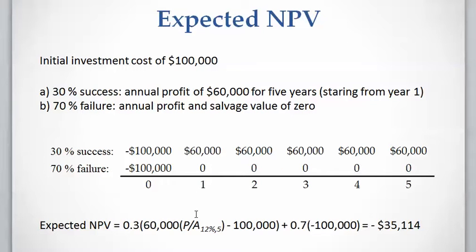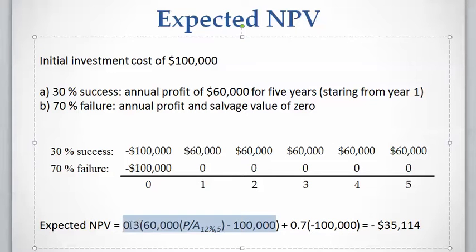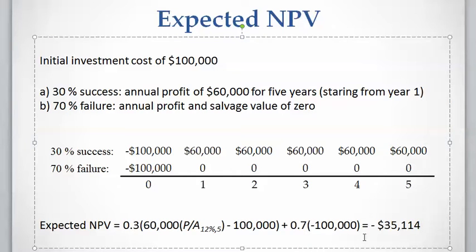We need to calculate the NPV of each case, multiply that by the probability, and then sum over all possible cases. The 30% probability of success case gives the NPV of success: $100,000 cost at present time and five equal payments of $60,000 from year one to year five. The failure case NPV is multiplied by 70% and equals just the $100,000 cost at present time. The resulting expected NPV for this project is a negative value.